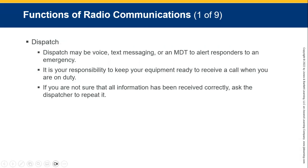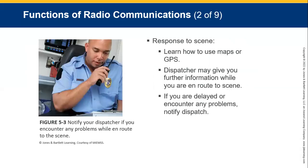Functions of radio communications — obviously, we need to be dispatched and provide information on where to go. It's your responsibility to keep your equipment ready to receive a call: batteries charged, always on, always with sound turned up. If you're not sure all information was received correctly, ask the dispatcher to repeat it. It's always a good idea to read it back to your dispatcher so they can confirm you've got everything right. We also need to know how to use maps or GPS — these days it's quite easy to drop a pin and relay that location to the next person.